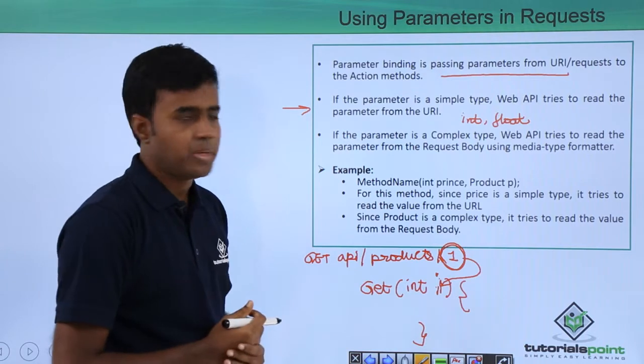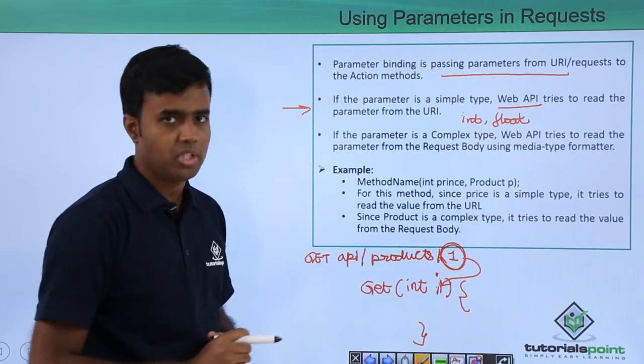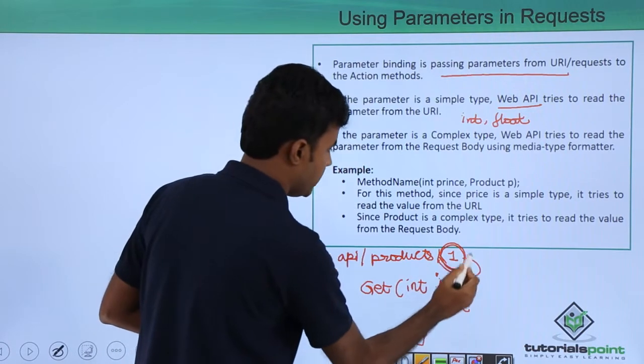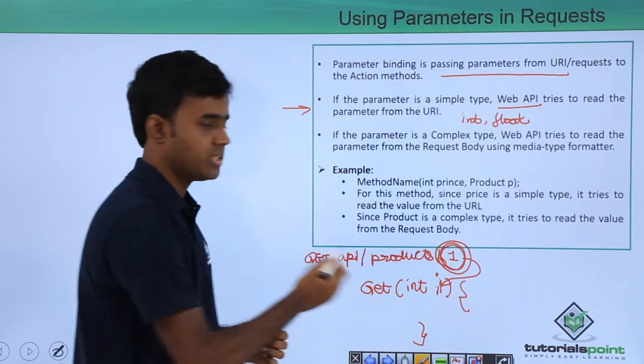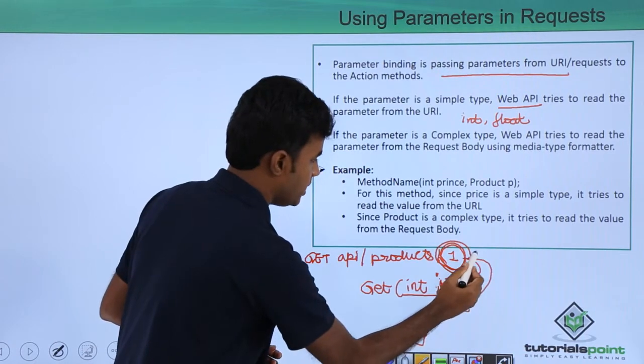If the parameter is a simple type, web API tries to read the parameter from the URL. Integer is a simple type and it tries to read the parameter from the URL.